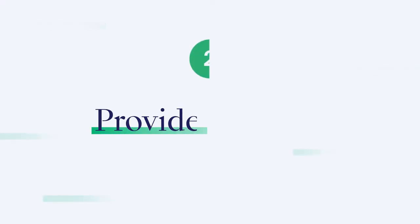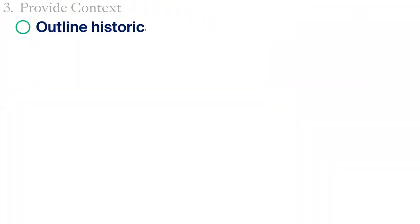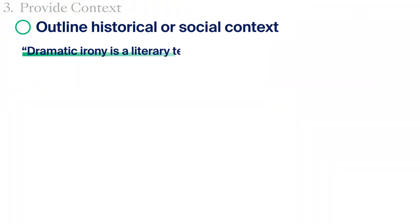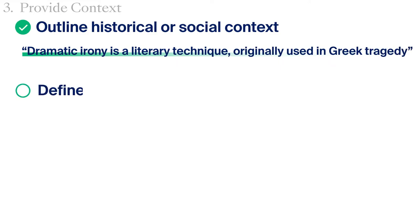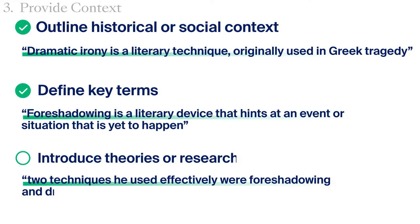Step two: provide context. Once you have them hooked, provide your reader with the background information they need to help them understand your essay. This means you should outline historical or social context, define key terms, and introduce relevant theories or research.